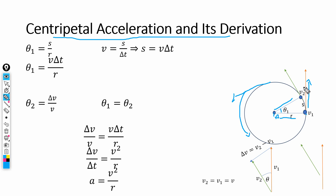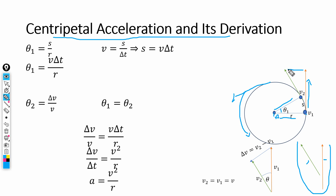If we connect the tail of vector v1 with vector v2, we form a second triangle. In this triangle, one side is v1, another is v2, and the side connecting them represents the change in velocity. We denote this as Δv, where Δv = v2 − v1, which is the change in velocity after time Δt. During this Δt, the object travels from point v1 to point v2.